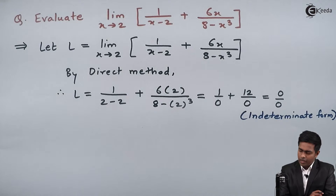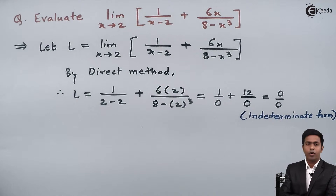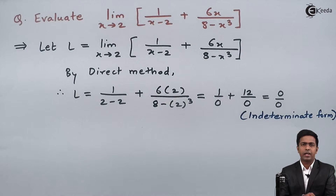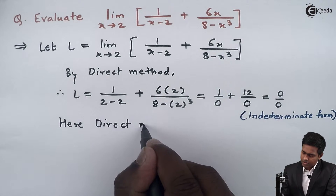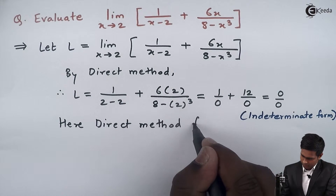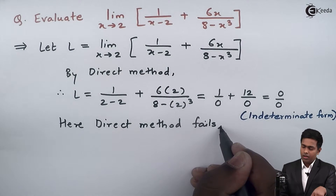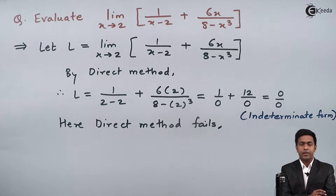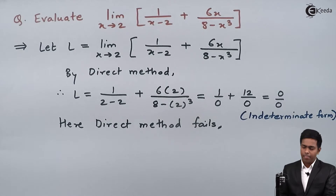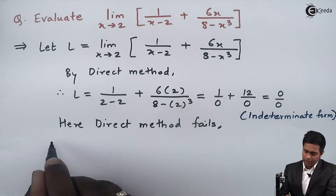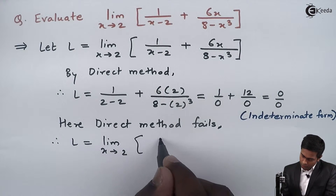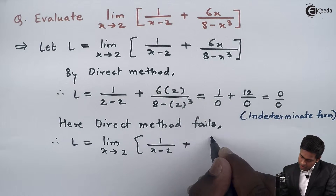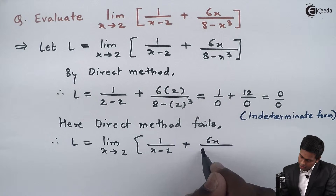Whenever we get 0/0 or an indeterminate form by direct method, we say direct method fails. So here, direct method fails. Whenever direct method fails, we look for some other method to get the value of the given limit. So I will rewrite the given limit as x tends to 2 of 1/(x−2) + 6x/(8−x³).